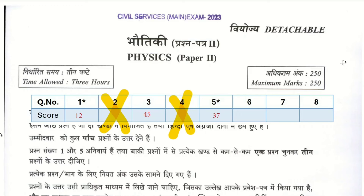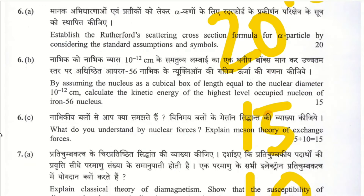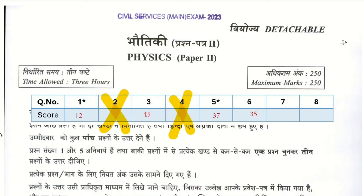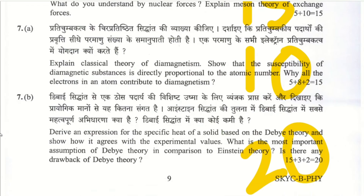Question 6: Rutherford scattering cross-section formula derivation for alpha particles — theory question, 20 marks. Skipping Part B (numerical). Part C — nuclear forces and meson theory of exchange — 15 marks. Total for Question 6: 35 marks.